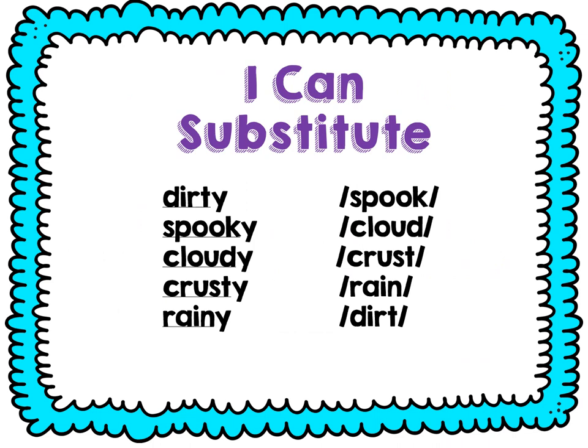Let's practice substituting. Say dirty — dirty. Change dirt to spook — spooky. Say spooky — spooky. Change spook to cloud — cloudy. Say cloudy. Change cloud to crust — crusty. Say crusty. Change crust to rain — rainy. Say rainy. Change rain to dirt — dirty.